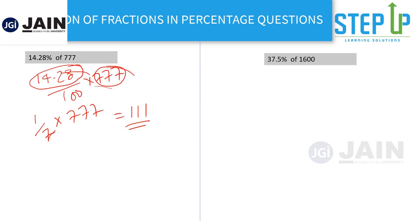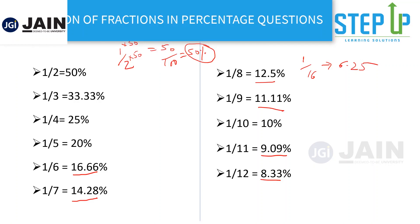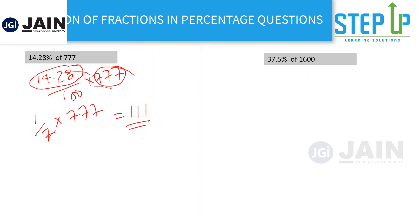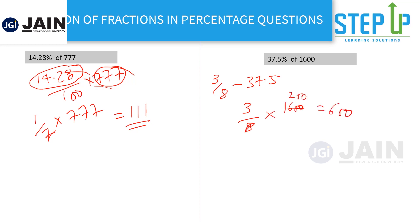Let's look at another problem: 37.5 percent of 1600. Now, we learned a few ratios — can you see a correlation here? Notice that 12.5 is 1 by 8, so 3 by 8 is nothing but 37.5. That means 37.5 percent is 3 by 8 of 1600. Orally, you can say 8 into 200 is 1600, so 3 into 200 is 600. Your answer — calculated orally.